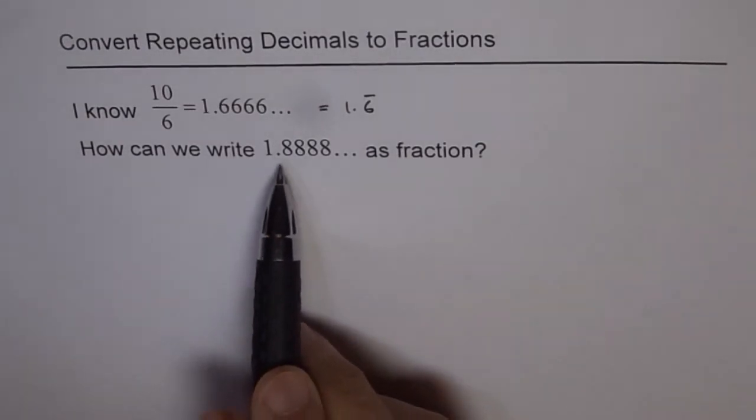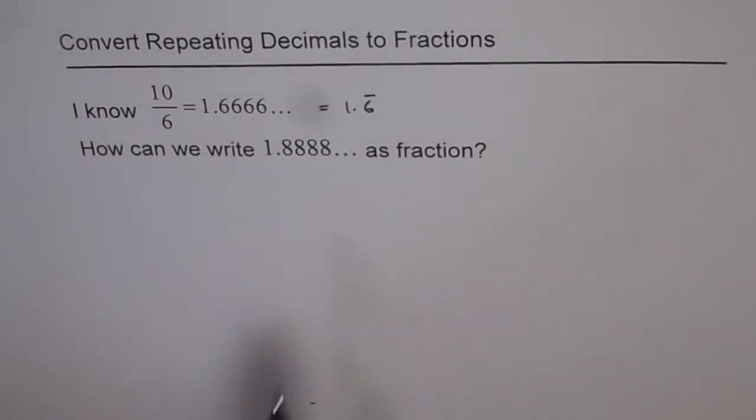How can we write 1.8888 as a fraction? These are repeating decimal numbers, also called recurring decimal numbers. We're trying to understand a technique so that we can write them as fractions.